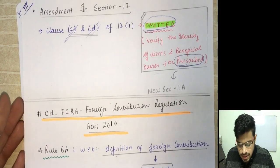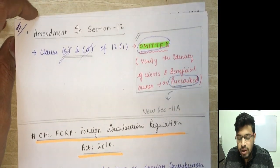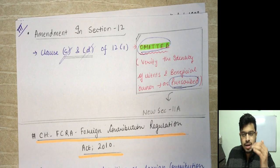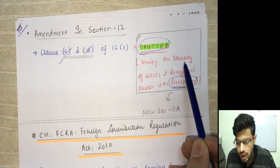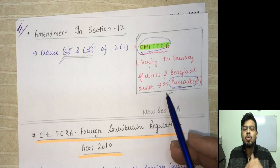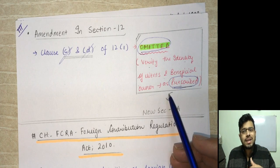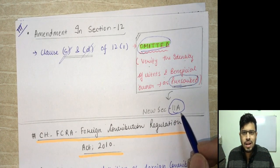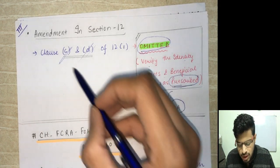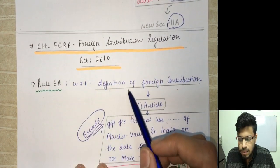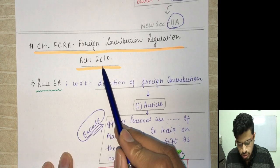The next amendment is in section 12, which deals with the reporting entity and its obligations. It had included clauses (c) and (d), which talked about verification of the identity of clients and beneficial owners as prescribed. Since section 11A already covers all of that — Aadhaar, passport — clauses (c) and (d) have now been omitted from section 12.